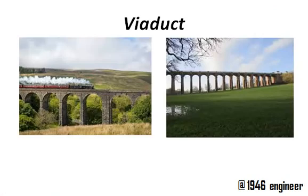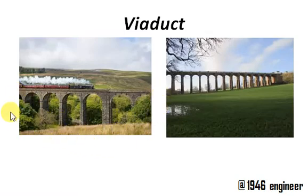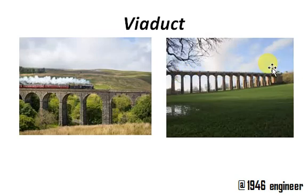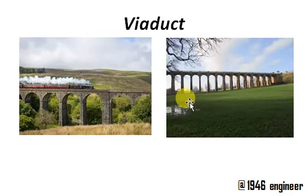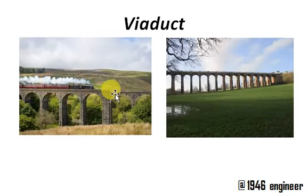Now let us discuss the difference between a viaduct and an aqueduct. A viaduct is a kind of bridge which spans across huge valleys on edge surface. It has many continuous spans which are roughly equal in length. Viaducts provide passage of traffic like railways or roadways.